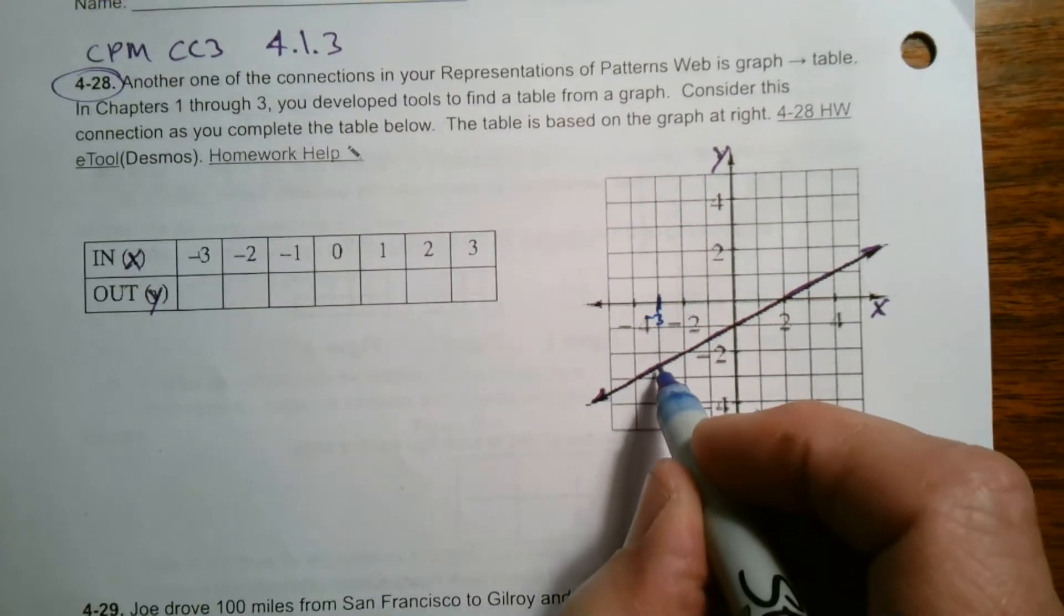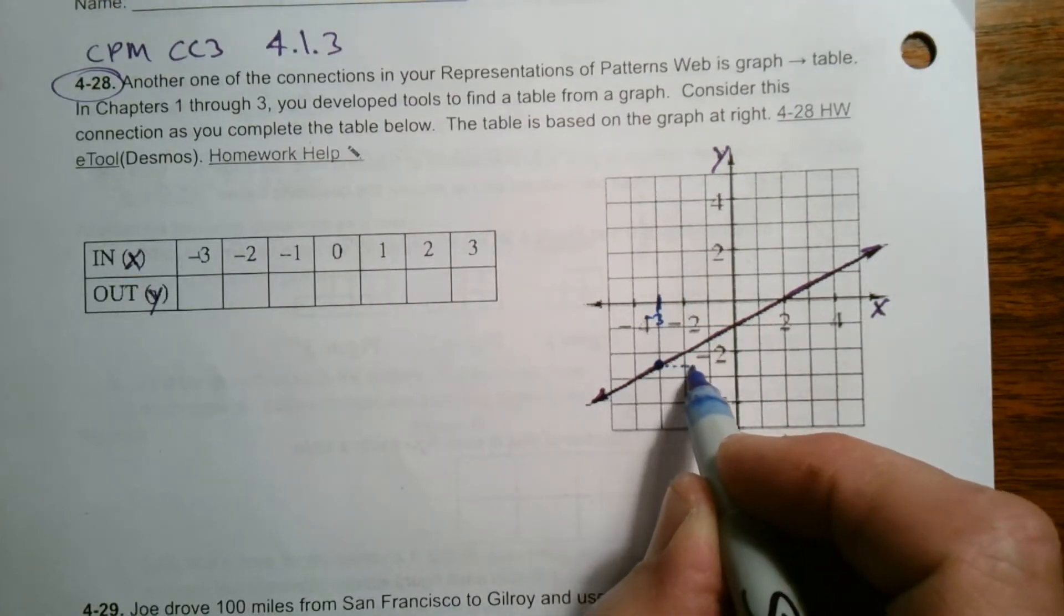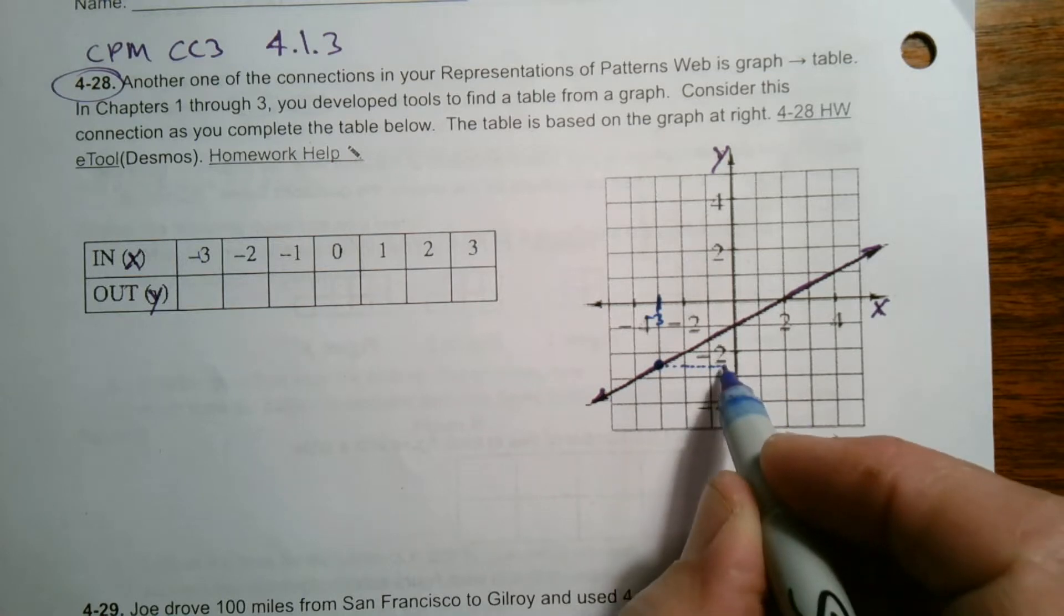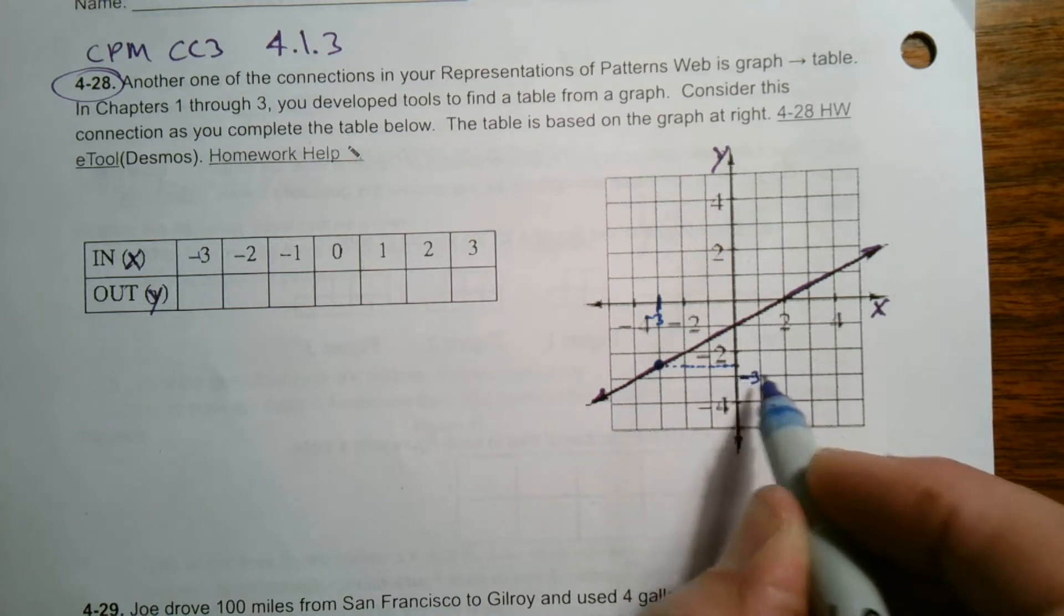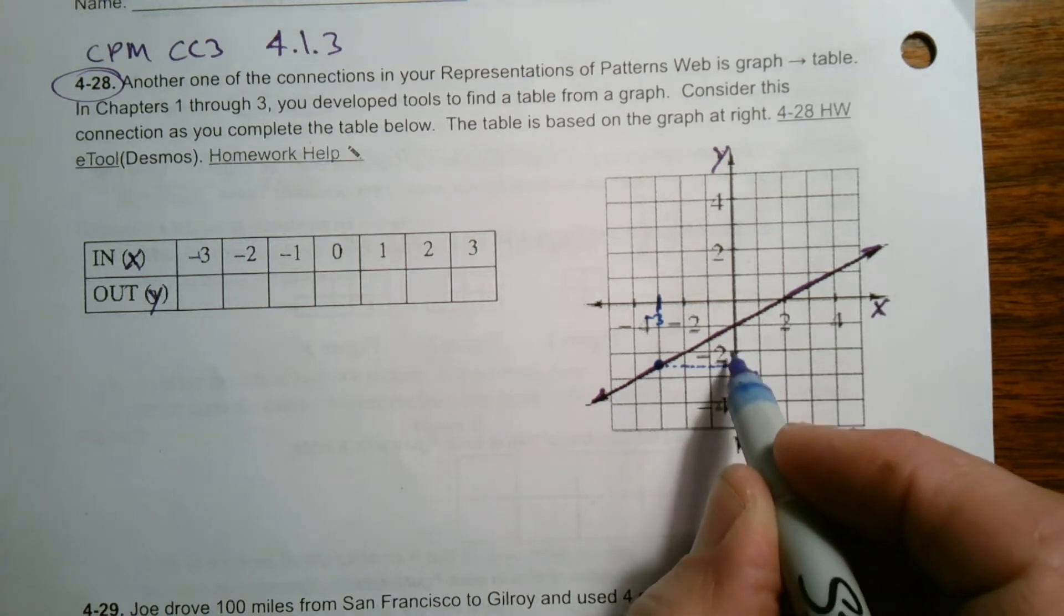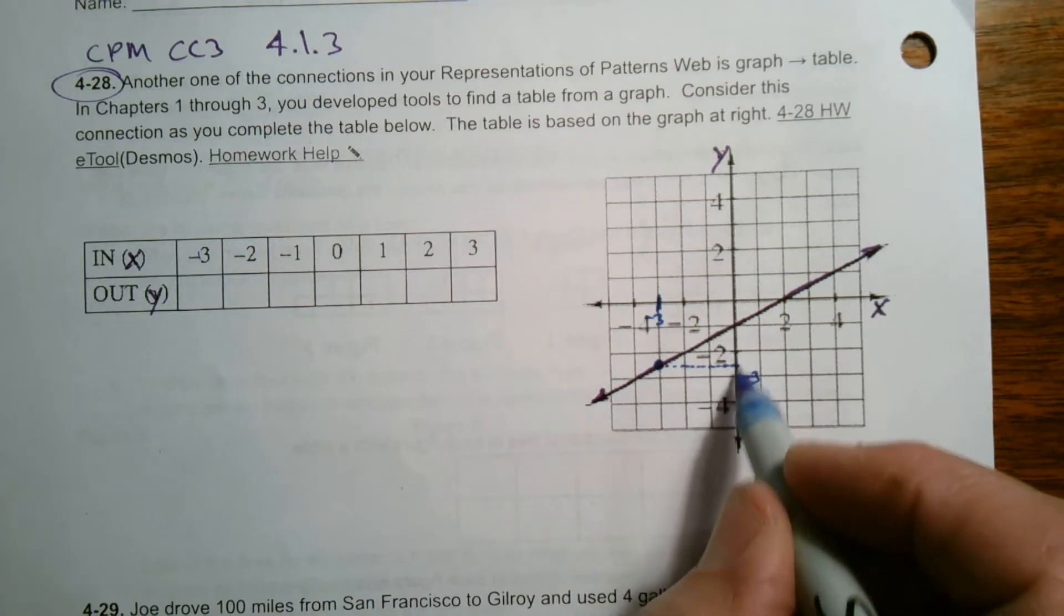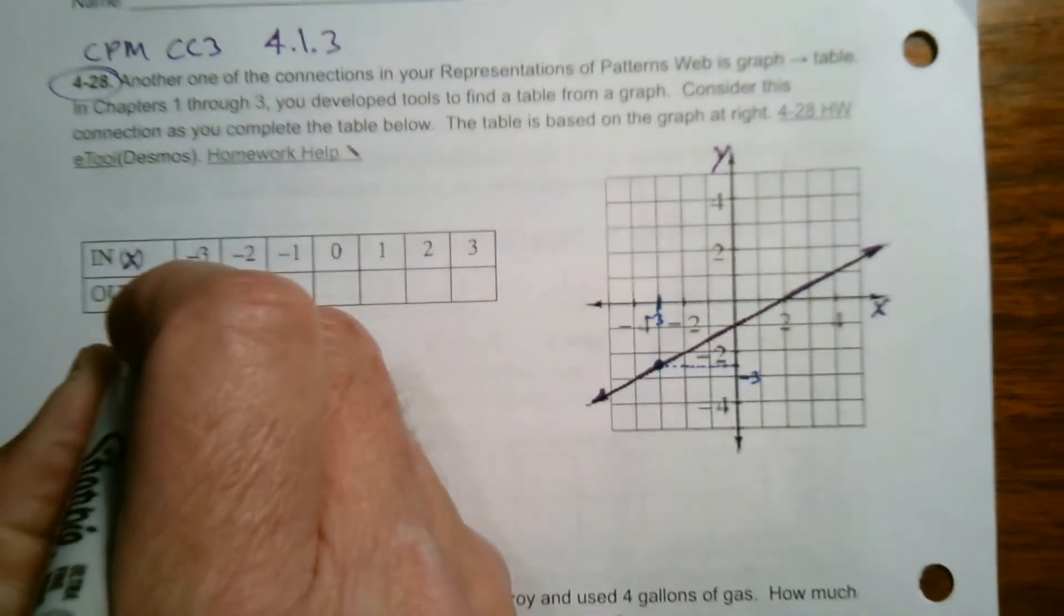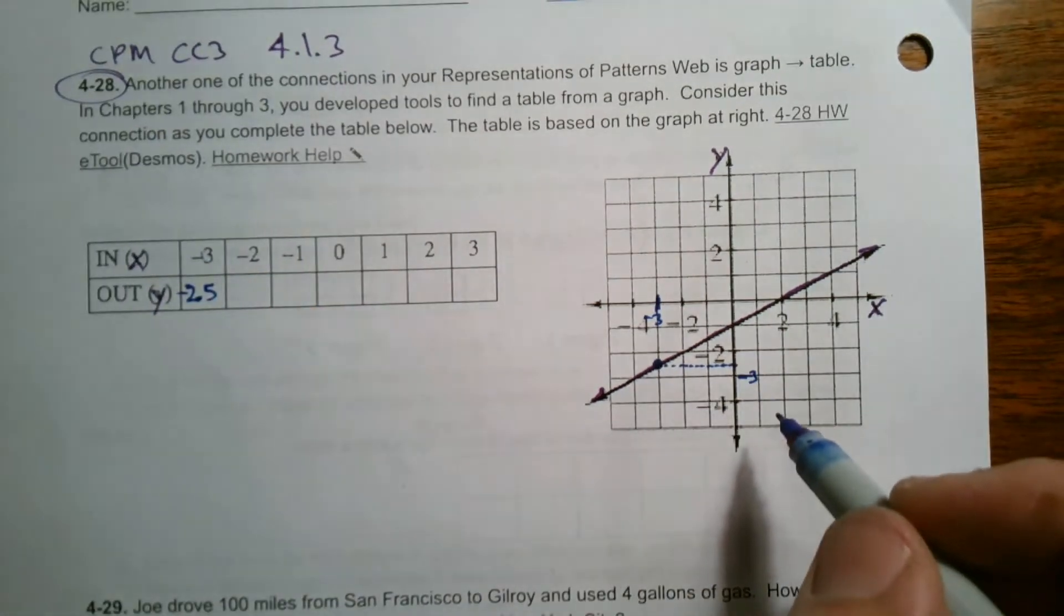If I cruise down and look at where that point is, where is the Y value for that? If that's negative two and this is negative four, then this one here is negative three. It looks like it's directly in between negative three and negative two on the Y value. That looks like negative 2.5, negative two and a half based on my graph.